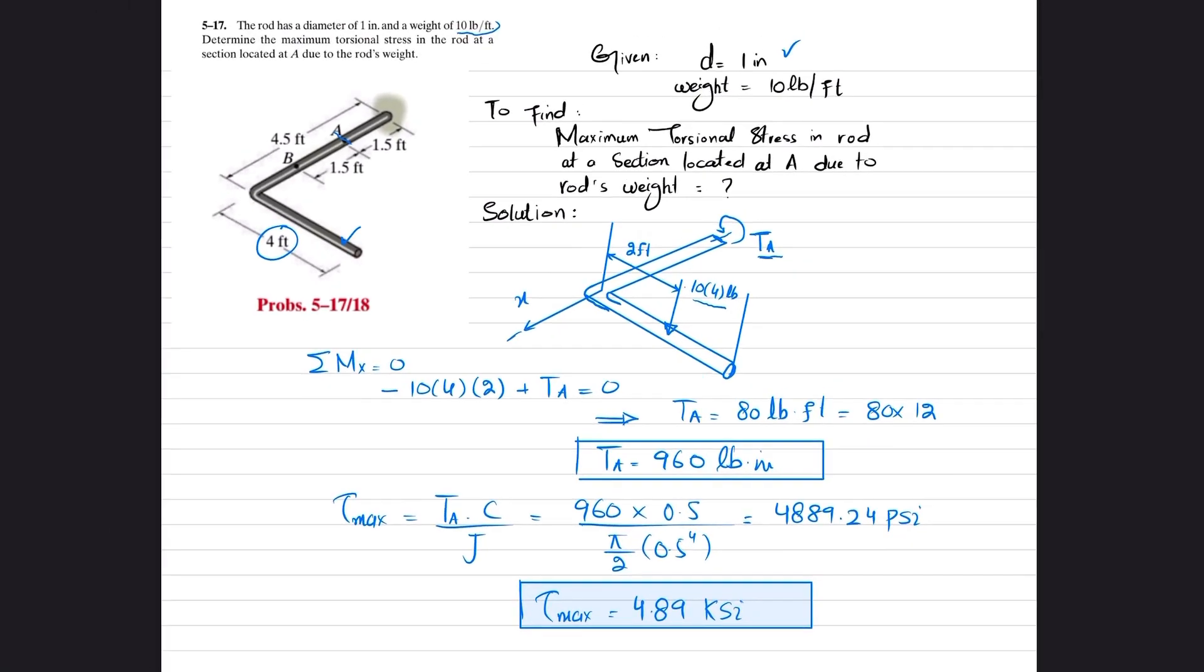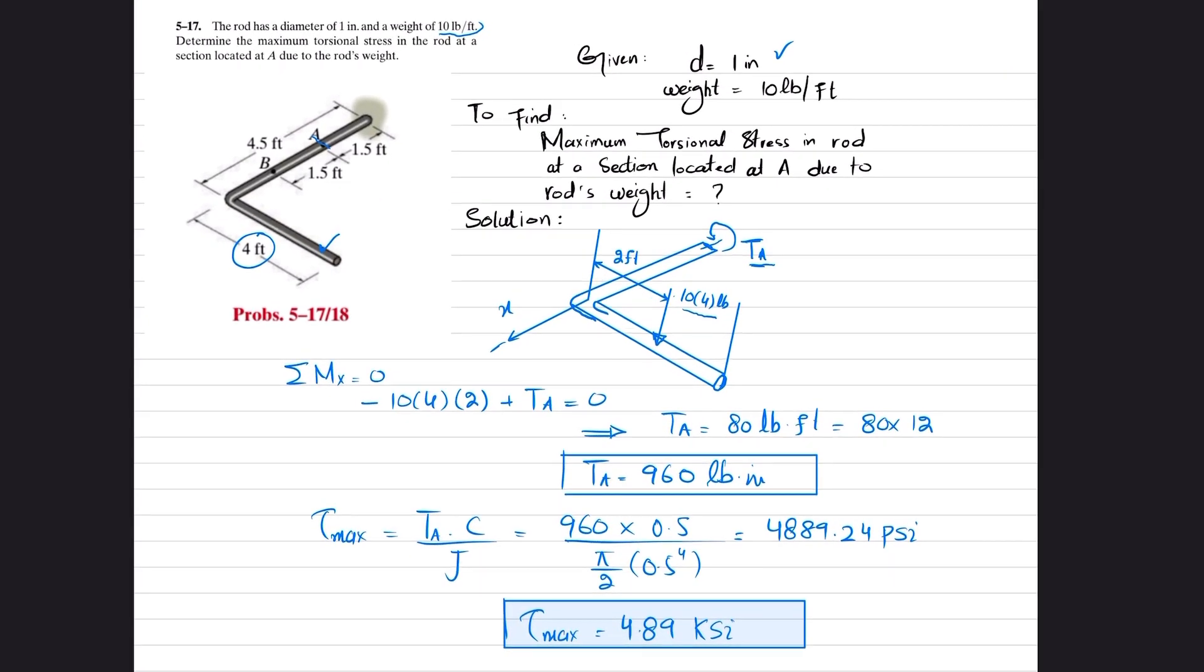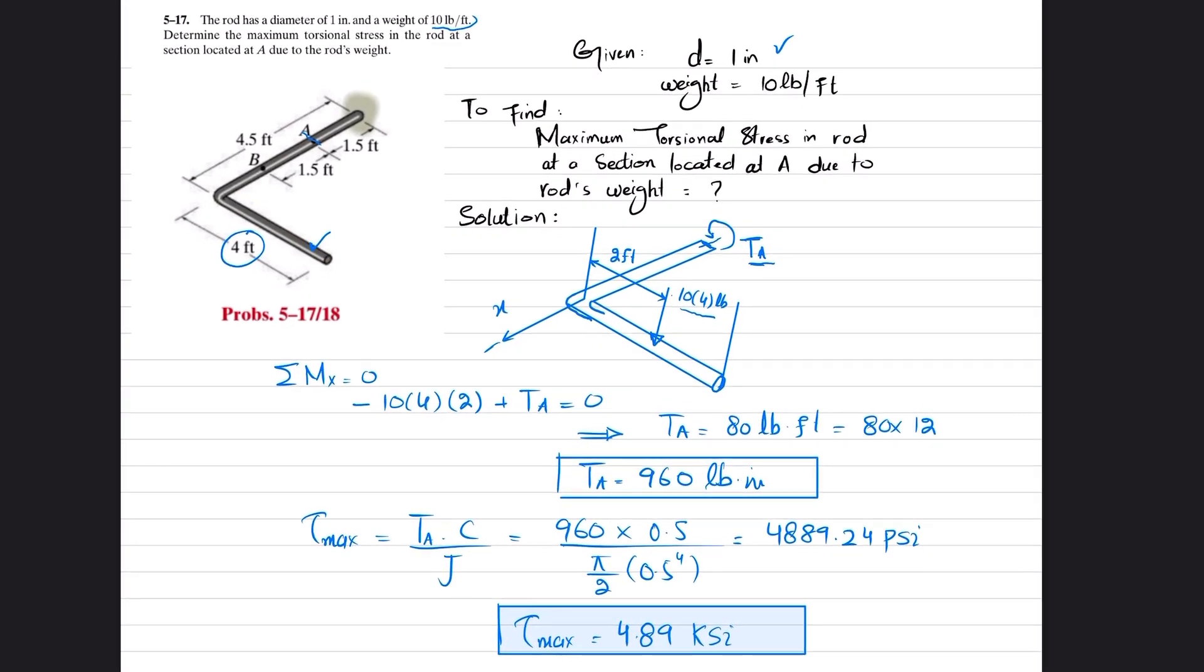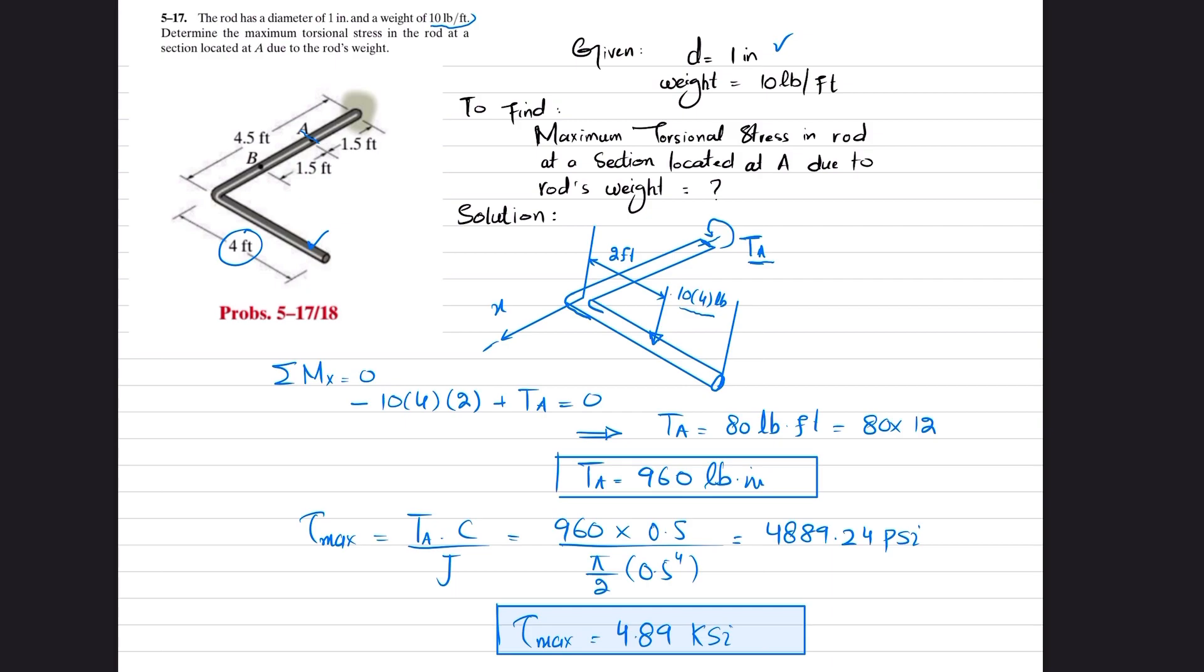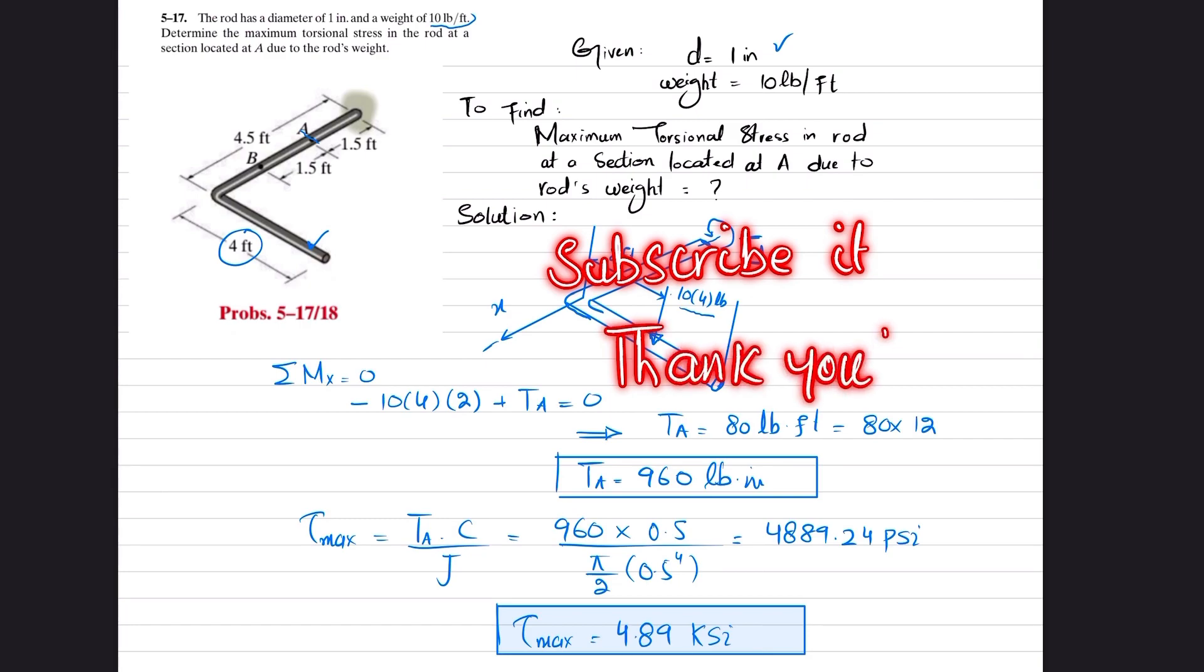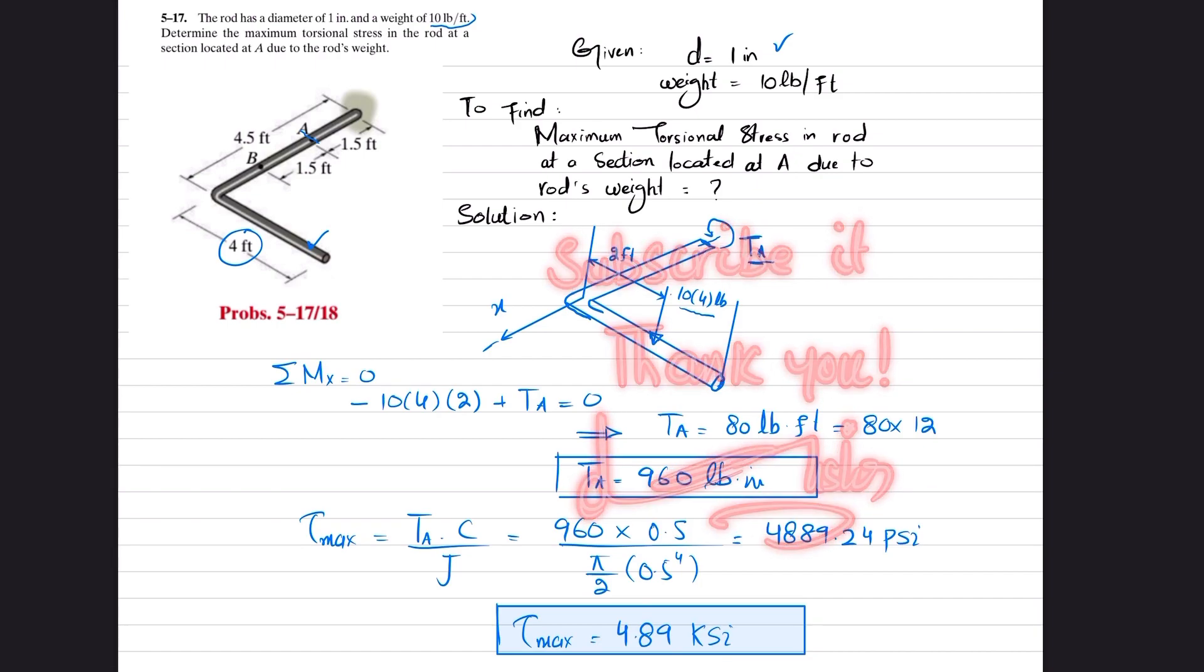This is the maximum shear stress at point A due to the weight of this pipe or rod. I hope you have enjoyed this video. If you are new to my channel then subscribe and press the bell icon so that you can get notifications about my latest videos. If you have any questions you can ask me in the comment section. Thank you for watching.